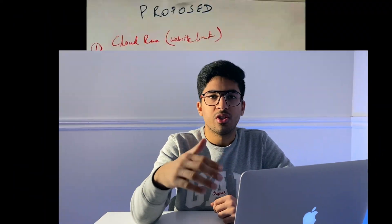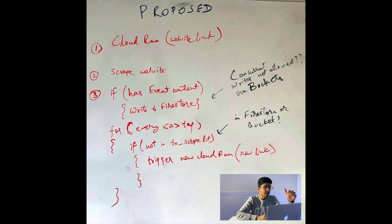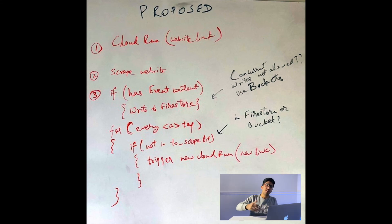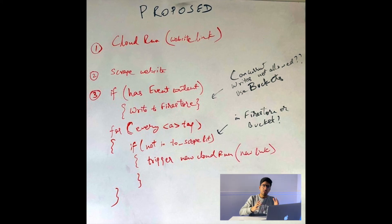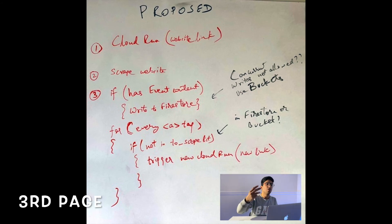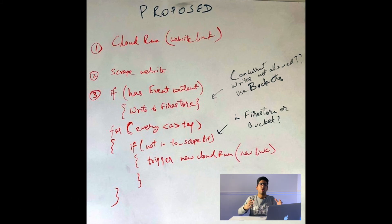Let's look at the implementation of the algorithm the company used and see what the problem was. In their pseudocode, they have a Cloud Run with the website link. What they want to do is scrape a website, see if there's anything relevant for a new announcement, and check for any anchor tags. If there is another anchor tag, they want to make a new thread — a new instance that goes through the linked page. So if page one has five links, one thread handles page one while new threads are instantly spun up for each subsequent link.